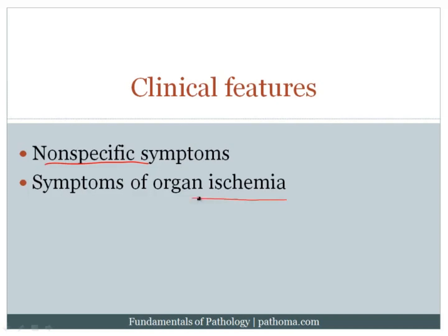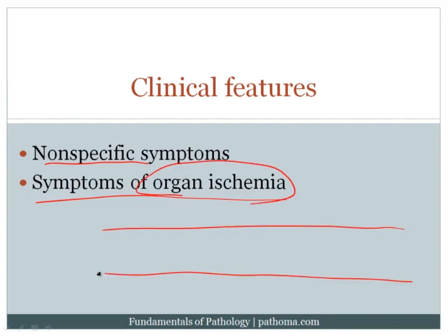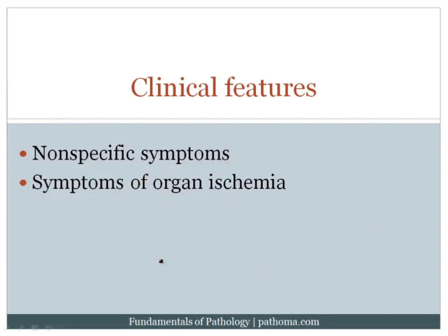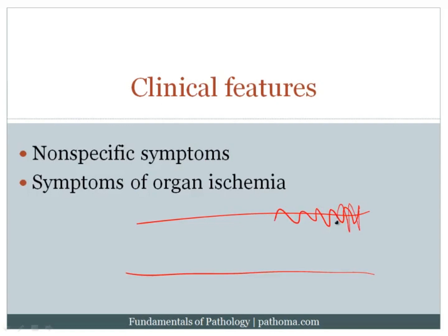Also present will be symptoms of organ ischemia. Each of these diseases has a different vascular bed it likes to affect. When you have vasculitis and disrupt the blood vessel, the endothelial cells get damaged, exposing the subendothelial collagen and tissue factor, which activates the coagulation cascade, resulting in thrombosis. A second mechanism is that after inflammation, healing ensues with fibrosis of the blood vessel wall, which narrows the lumen and decreases blood flow, again resulting in organ ischemia.